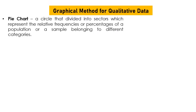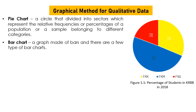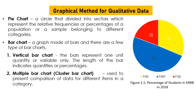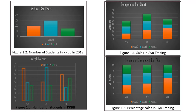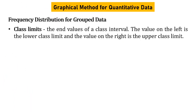A pie chart is a circle divided into sectors which represent the relative frequency or percentage of a population or sample belonging to different categories. A bar chart is a graph made of bars. There are a few types: vertical bar chart, multiple bar chart, component bar chart, and percentage component bar chart — so four types of bar chart in total.